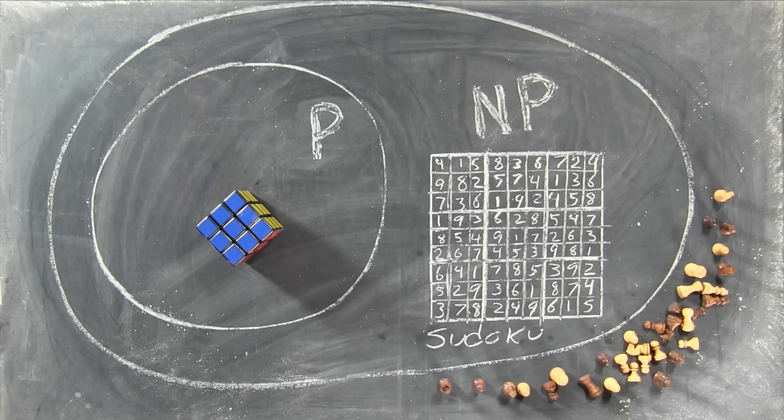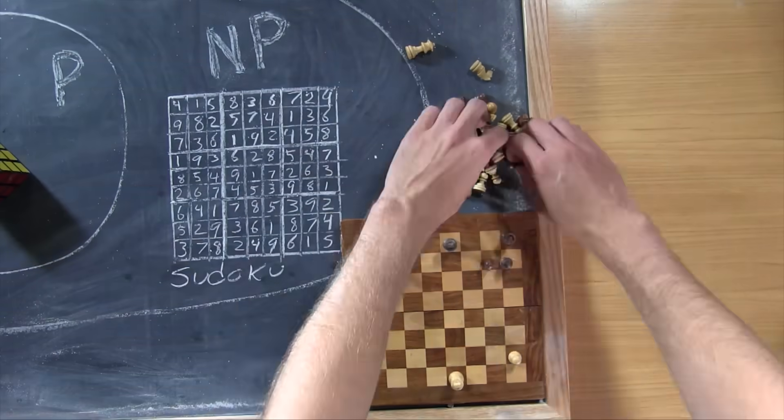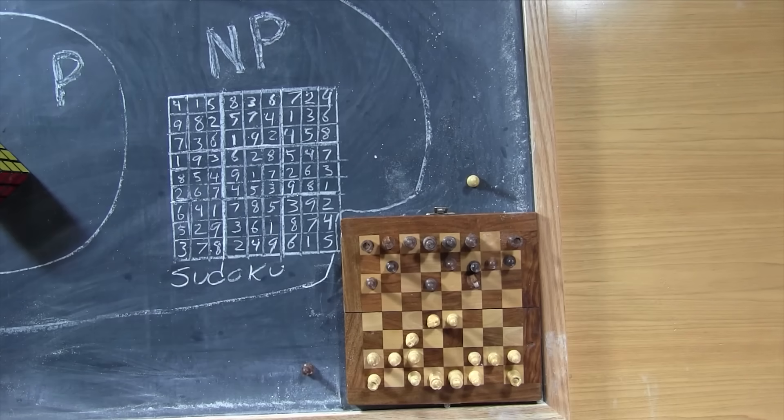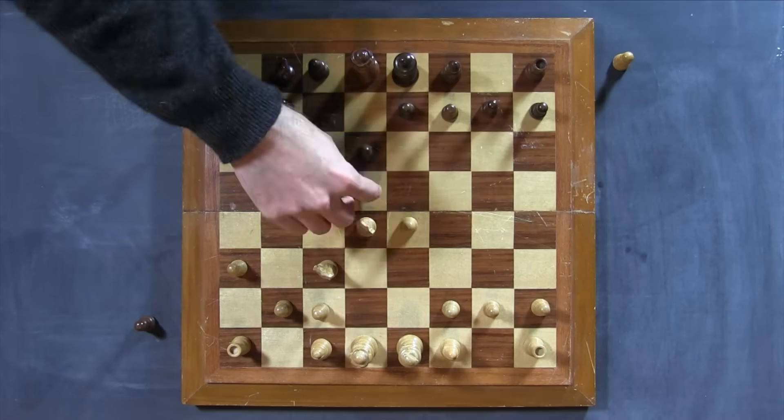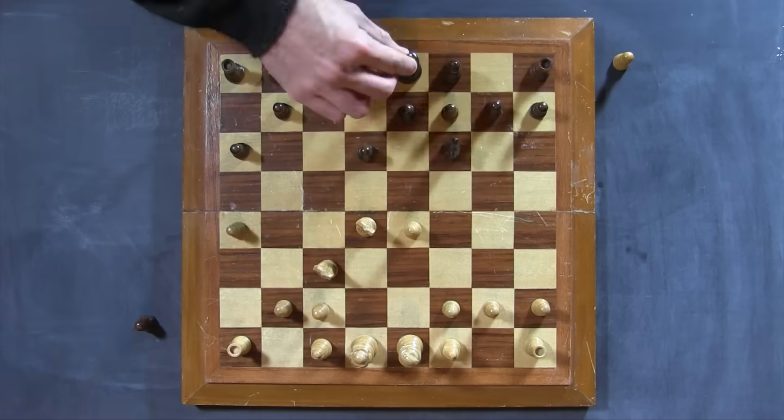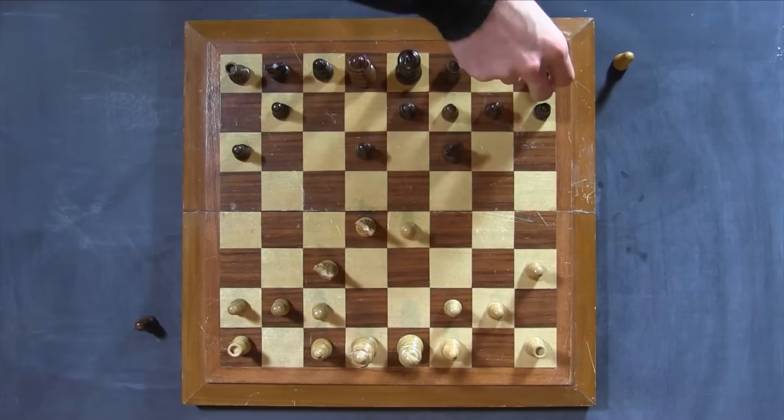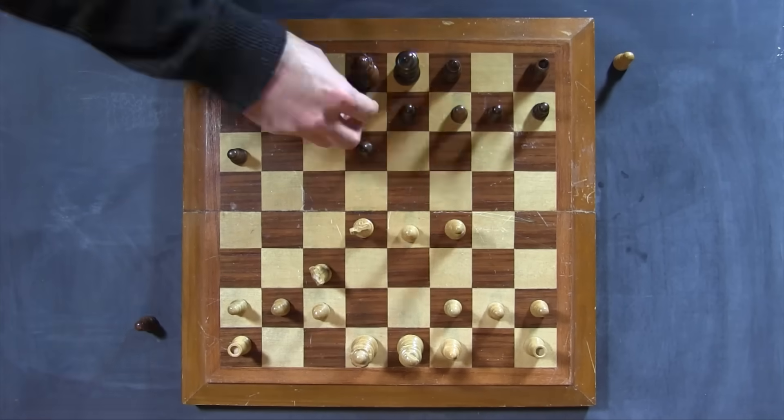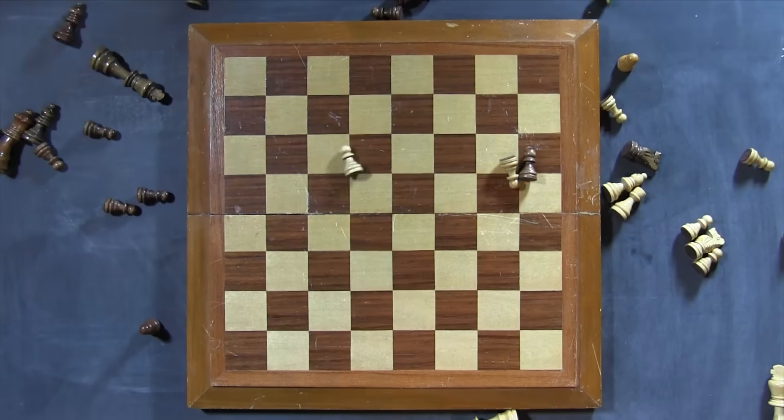Outside of NP are problems where it's hard to even check an answer. Like, what's the best move to make in this chess game? I could tell you the answer, but how would you know whether I'm right? Well, you wouldn't, because finding out requires a calculation so enormous that there's a pretty good argument we'll never be able to build a computer that could do it. To me, that's not a very good puzzle. It's practically impossible to know whether you've solved it.